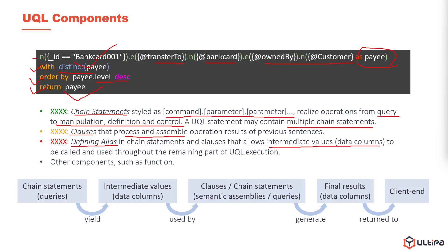There are many other UQL examples that may look quite different than the one illustrated here, and the UQL statement does not necessarily have all these components. But a general and typical process logic of a UQL statement can be summarized as: chain statement initiates queries and generates intermediate values as data columns. These data columns are given alias and used by clauses for further calculations or assemblies, or by other chain statements for deeper queries. The final result of this UQL is ultimately returned to the client end.